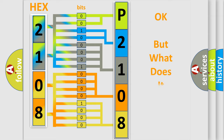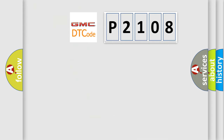We now know in what way the diagnostic tool translates the received information into a more comprehensible format. The number itself does not make sense to us if we cannot assign information about what it actually expresses. So, what does the diagnostic trouble code P2108 interpret specifically for GMC car manufacturers?